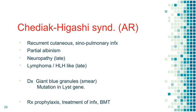Chediak-Higashi syndrome: another autosomal recessive syndrome. The hallmark is recurrent cutaneous and sinus pulmonary infections, partial albinism with a streak of white hair, neuropathy if advanced, and increased risk for lymphoma and HLH-like syndromes. Diagnosis: giant blue granules on blood smear; you can do the genetic test — it's the LYST gene. Treatment: prophylactic antibiotics, treat infection. Curable with a bone marrow transplant.